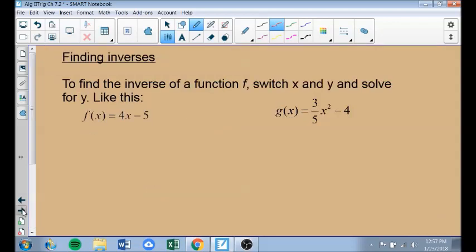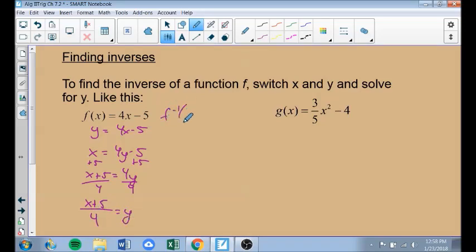We're going to find the inverses of these functions. Here's F of X. I want to find F inverse of X. The way you find the inverse of a function is you switch X and Y and solve for Y. Right now, this is saying Y equals 4X minus 5. I'm going to switch the X and Y coordinates and then get the Y by itself. I start by adding 5 to both sides. So X plus 5 equals 4Y. Then I divide everything by 4.